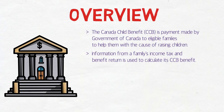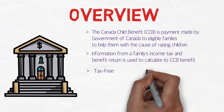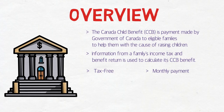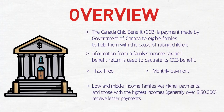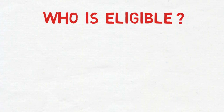Both the income tax of the main applicant and the spouse are calculated to determine the CCB benefit. It is tax-free and the payments are monthly, so you don't have to pay any tax on this amount. Low and middle income families get higher payments, while those with the highest incomes receive lesser payments — this is to maintain a kind of equality, so that families with lower earnings can still provide better food and opportunities for their children.